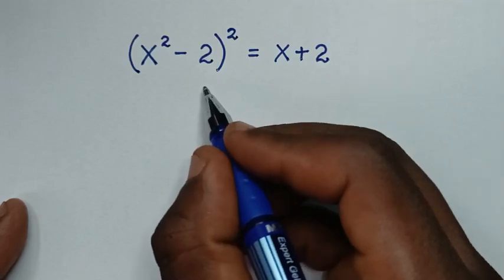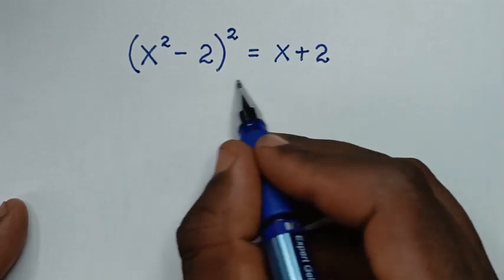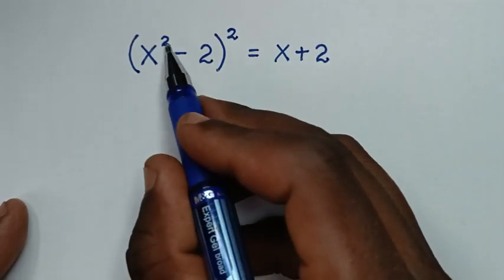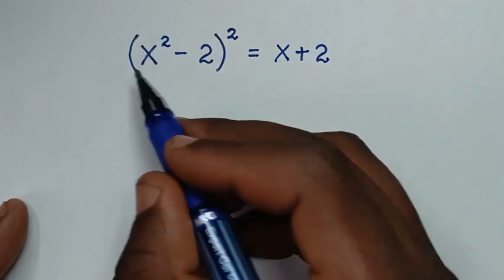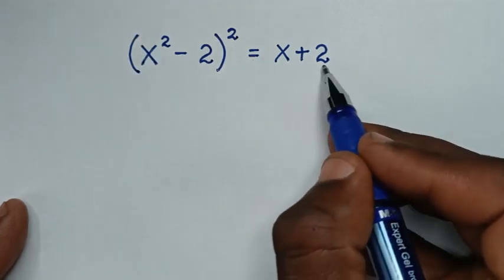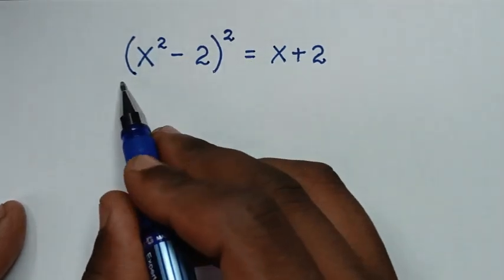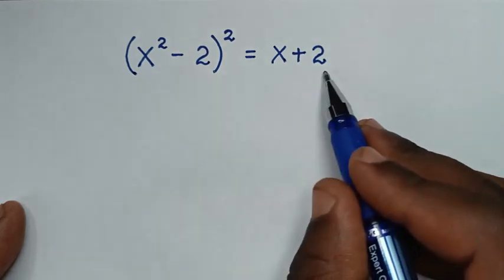Hello, you are welcome to solve this math problem: (x² - 2)² = x + 2. We need to find the values of x from this equation.